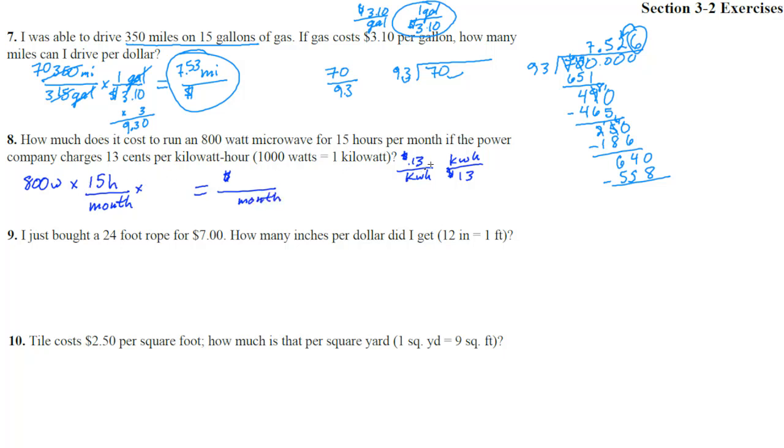We are going to use this one right here where it has the dollars on top. So that's 0.13 dollars per kilowatt hour. Oh, no. We got to change this into kilowatts. We need to times by 1,000 watts for 1 kilowatt. I chose that because it cancels the watts and it puts the kilowatts here.